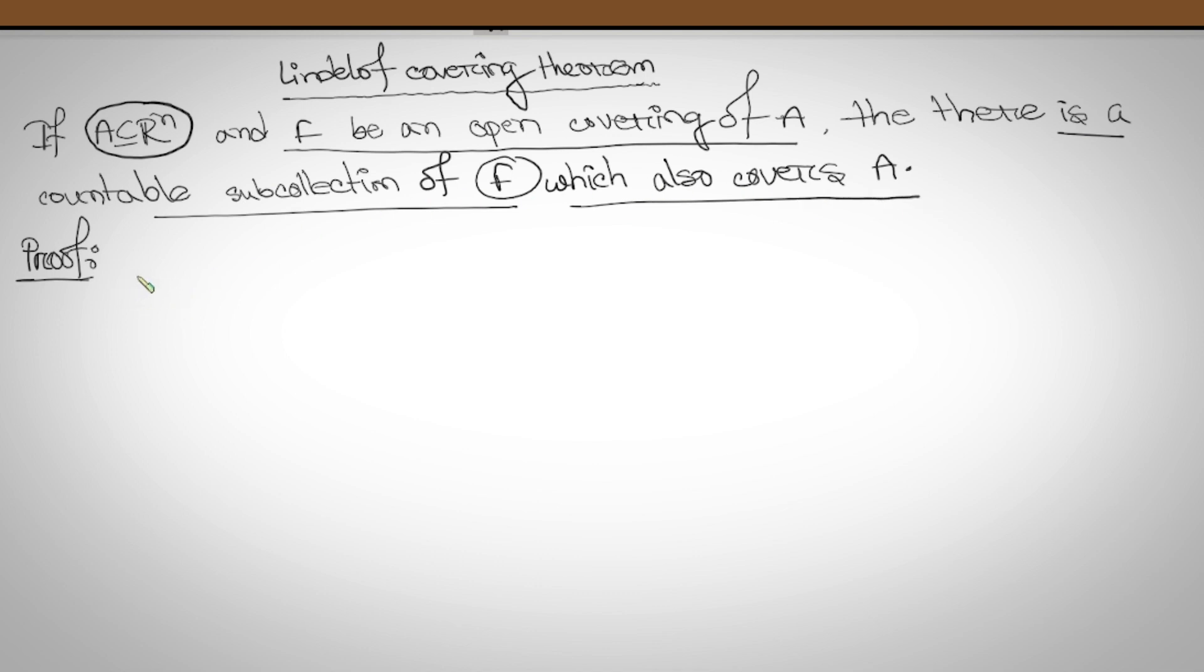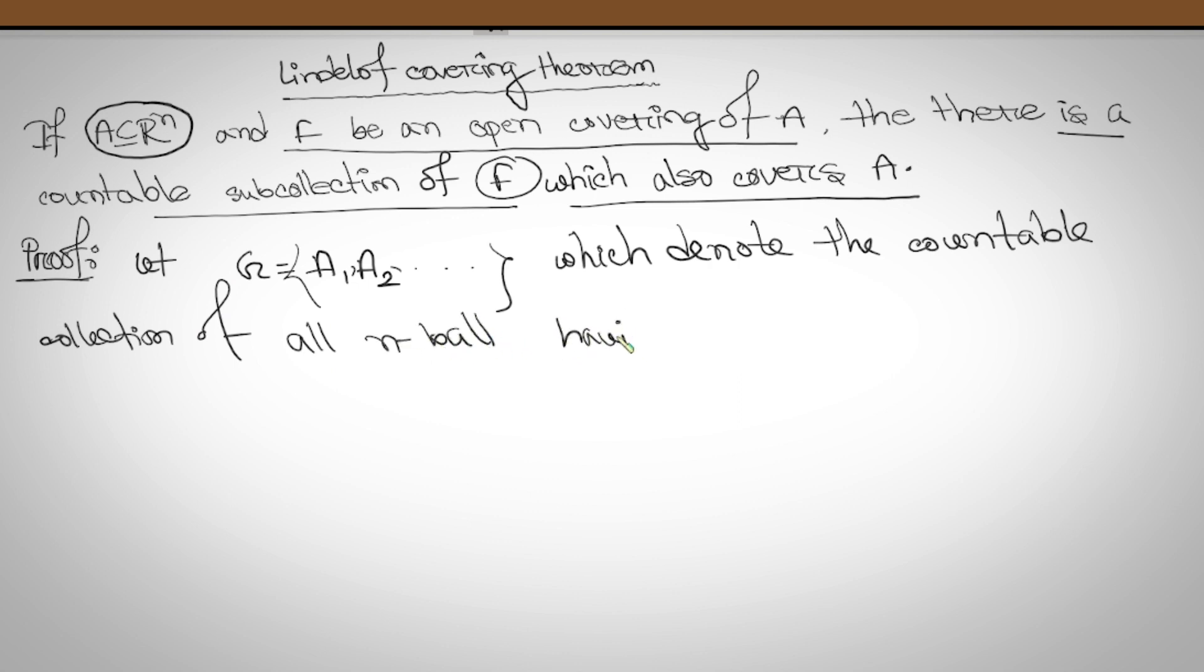For the proof, we'll use some open ball sets. Let G equals A1, A2, dot dot dot, which denotes the countable collection of all n-balls having rational centers and rational radius.